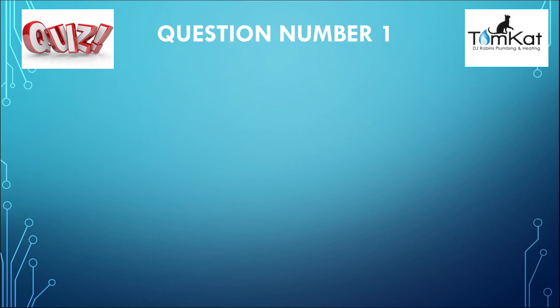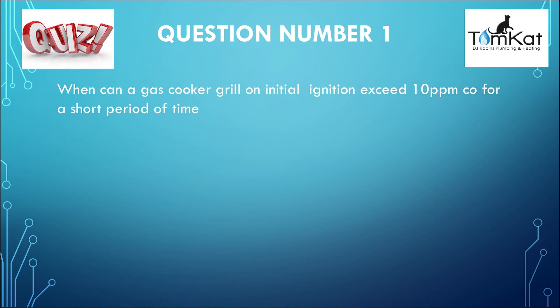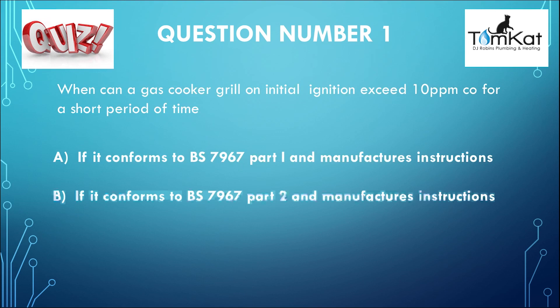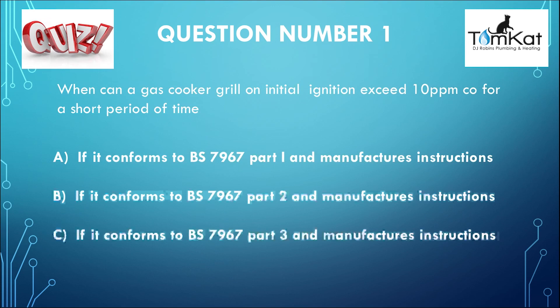Question number one: When can a gas cooker grill initial ignition exceed 10 parts per million CO for a short period of time? Is it A, if it conforms to BS 7967 part 2 and manufacturer's instructions? Or C, if it conforms to BS 7967 part 3 and manufacturer's instructions? That is the end of question one.